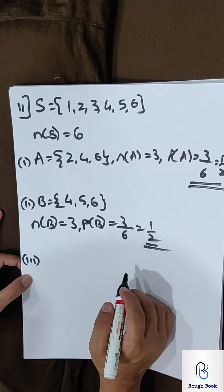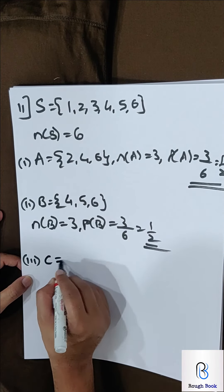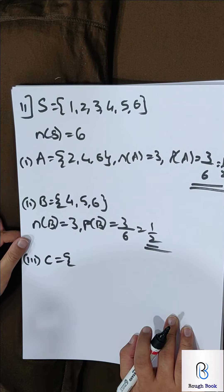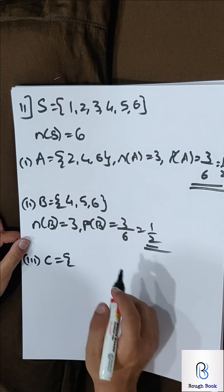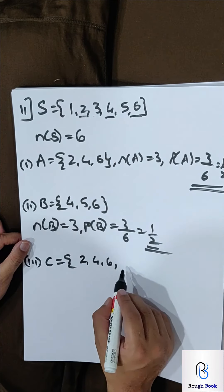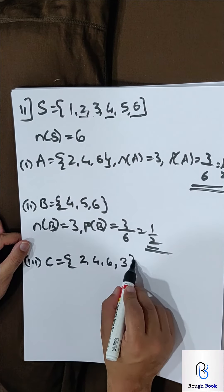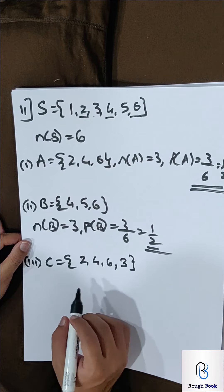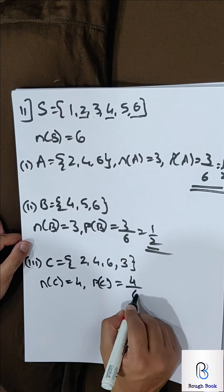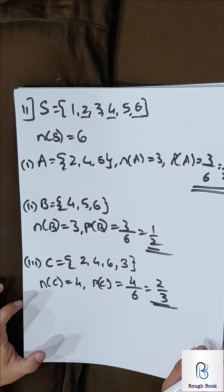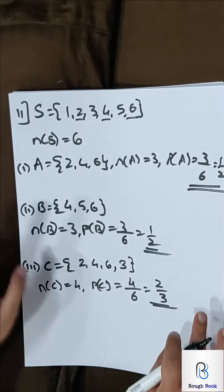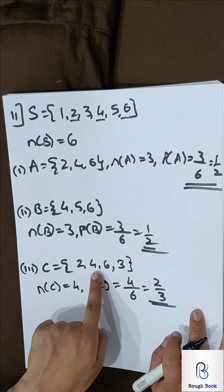Third event: an even number OR a multiple of 3. Even numbers are 2, 4, 6. Multiples of 3 on a die are 3 and 6 — but 6 is already listed, so we don't write it twice. The combined set is {2, 3, 4, 6}. Number of C = 4. Probability of C = 4 by 6 = 2 by 3. When the word OR is used, include both sets but only once — 6 was repeated so we used it only once.